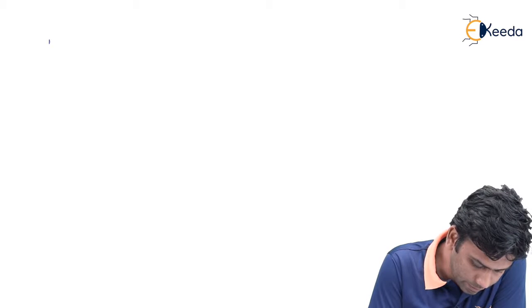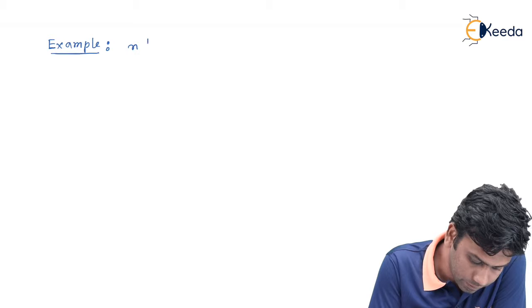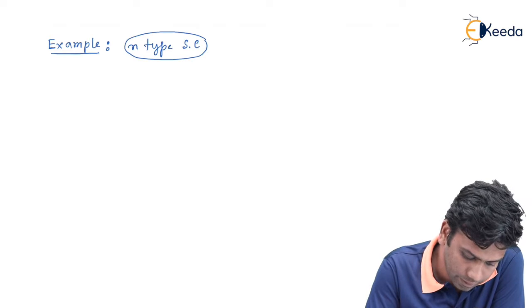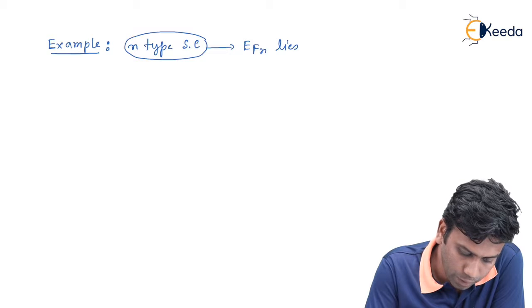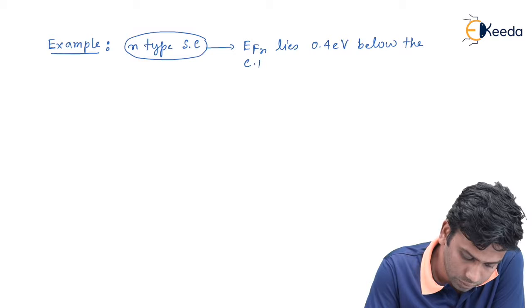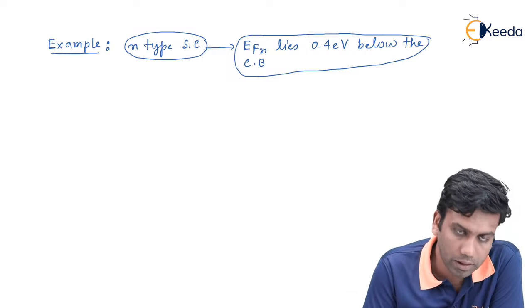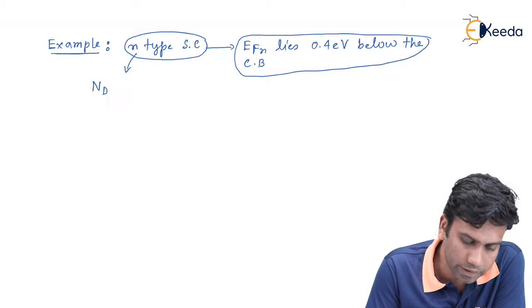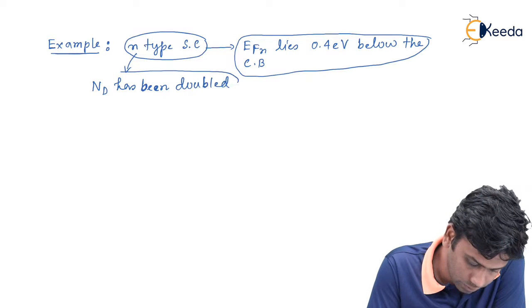So the example looks like this. Let us consider an n-type semiconductor, and in this n-type semiconductor the EFN lies 0.4 electron volt below the conduction band. Now the doping concentration of this n-type semiconductor, that is the donor concentration ND, has been doubled by some means.